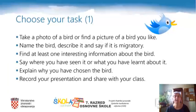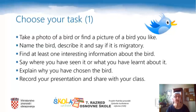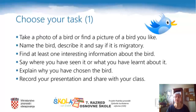It's time to pick a task for today's lesson — either task one or task two. If you decide to do task number one: take a photo of a bird or find a picture of a bird, then name the bird, describe it, say if it's migratory, and find at least one interesting piece of information about that bird. You can say where you have seen it or what you have learned about it. You must explain why you have chosen that bird. Record your presentation and don't forget to share it with your class. You can use your mobile phone or an online tool like Wakelet.